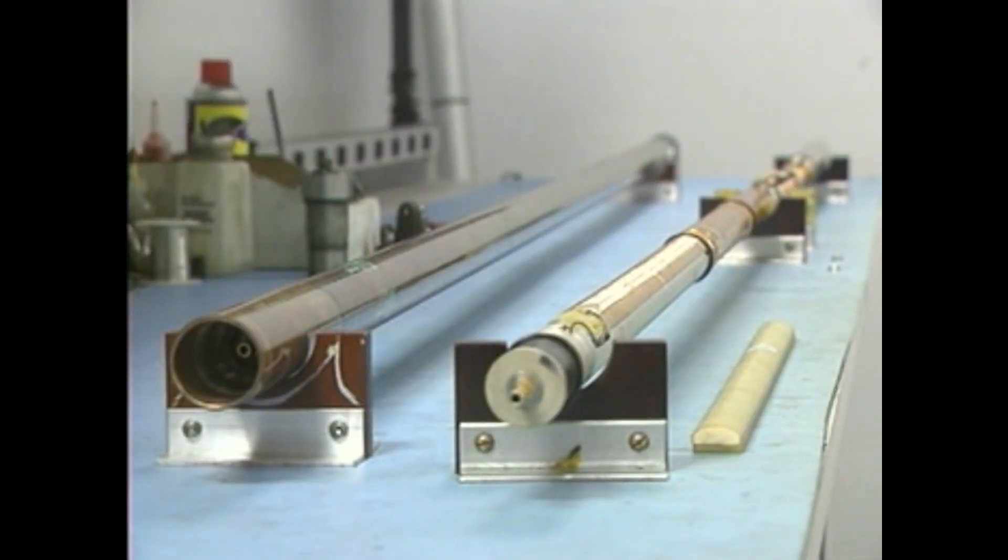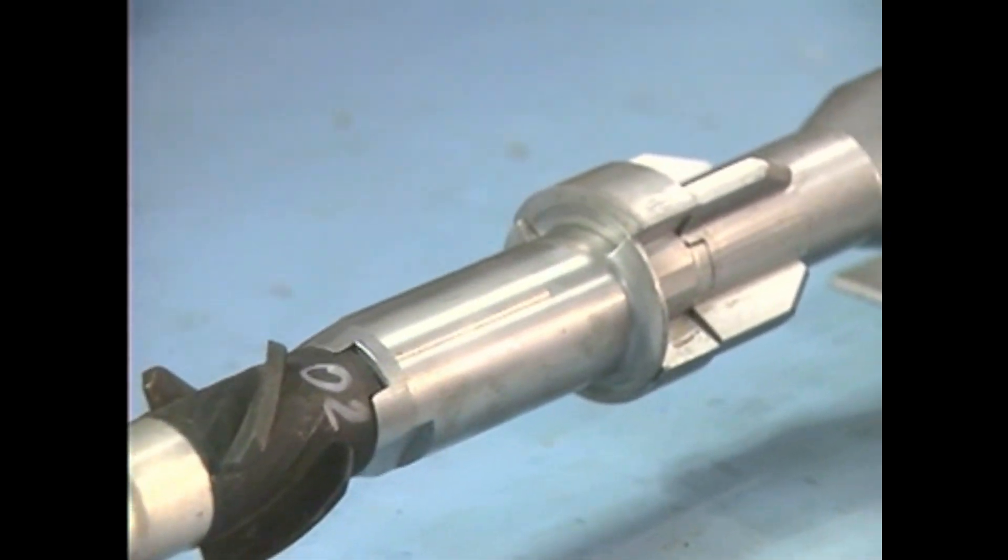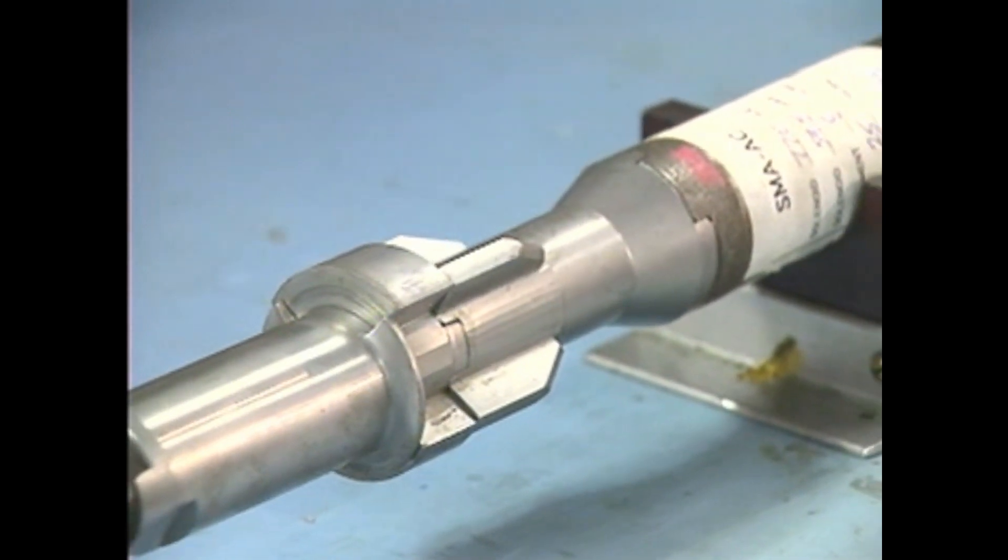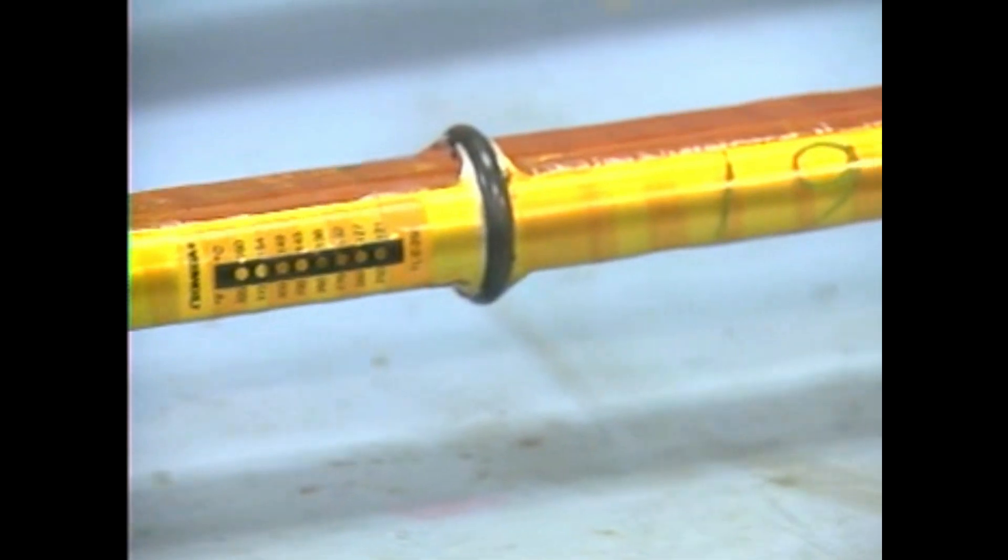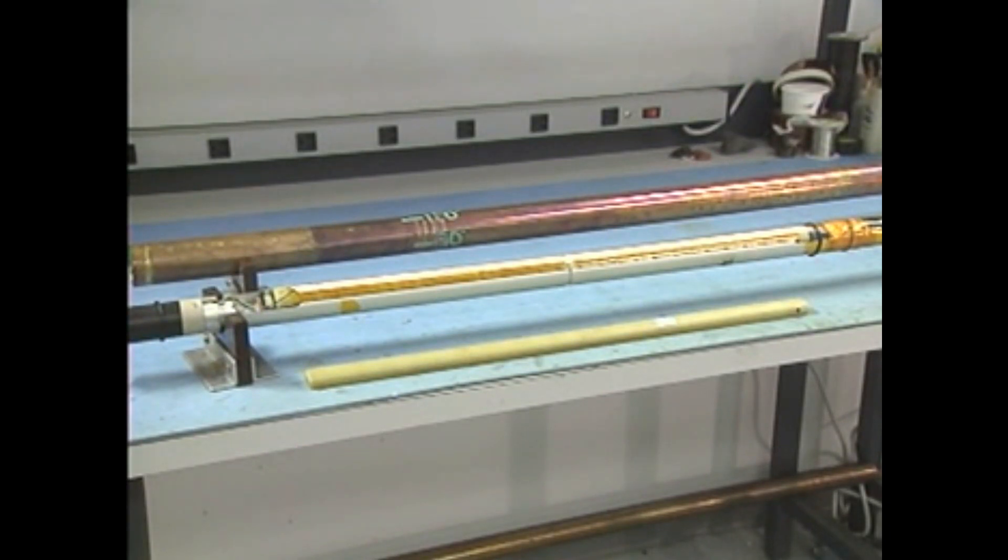The basic components of the MWD instrument package shown here include a battery powered pulsar module which in this case employs a continuous mud wave transmission, a sensor module containing triaxial inclinometers to measure drift and triaxial magnetometers to measure azimuth along with temperature and pressure sensors, and an electronics module.